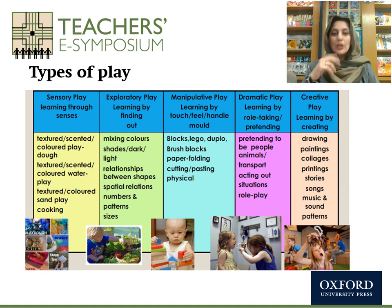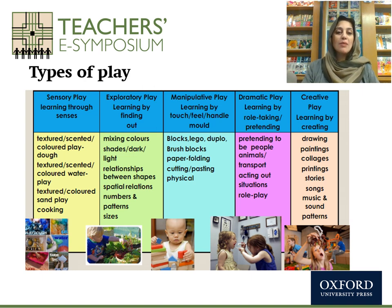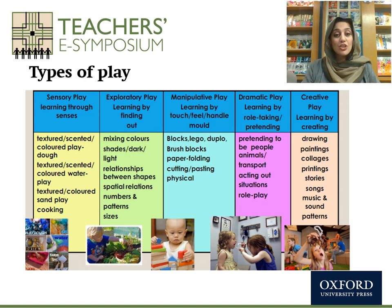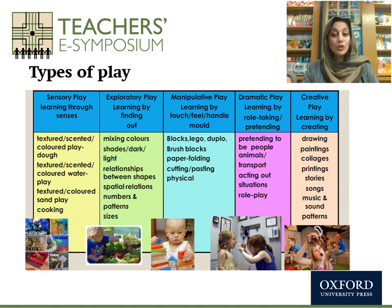Talking about exploratory play — learning by finding out — the kinds of activities you can include are mixing colors, shades, dark and light. You can ask students to come up with a new color by mixing two colors, and explore relationships between shapes, spatial relationships, numbers, and sizes. Through these activities, you can teach them mathematical concepts and science concepts as well.